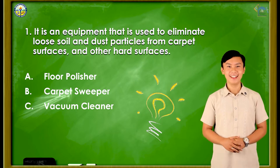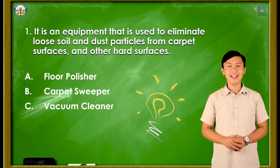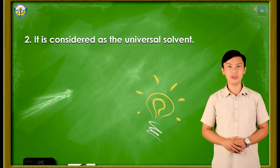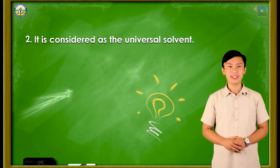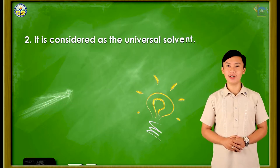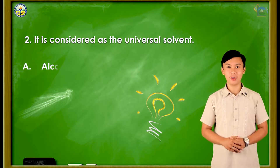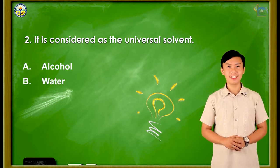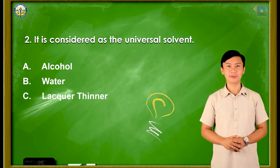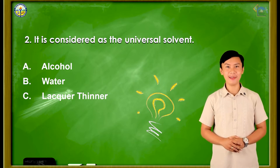The correct answer is letter C. Question number 2: it is considered as the universal solvent. Letter A: Alcohol. B: Water. C: Liquor thinner. And the correct answer is letter B.